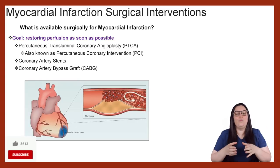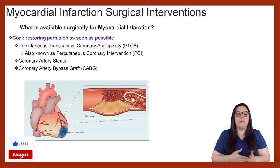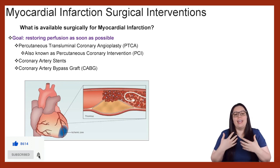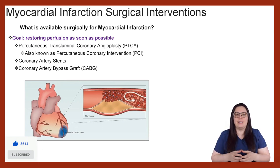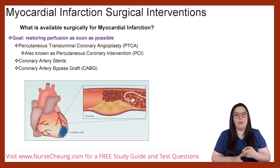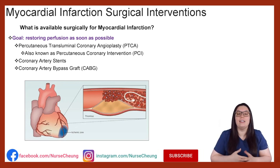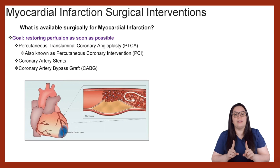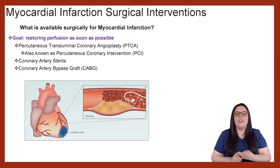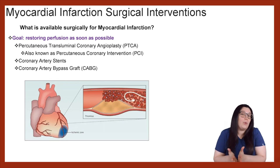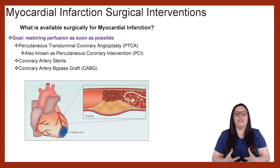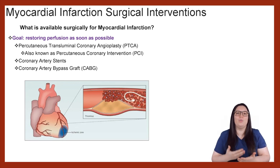What is available surgically when it comes to myocardial infarctions? We have percutaneous transluminal coronary angioplasty, also known as PTCA — also known as percutaneous coronary intervention, or PCI. A lot of facilities will use them interchangeably. We also have coronary artery stents as well as coronary artery bypass grafting, also known as CABG. The goal when it comes to surgical interventions is we want to restore perfusion as soon as possible.